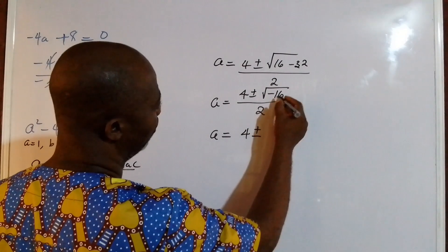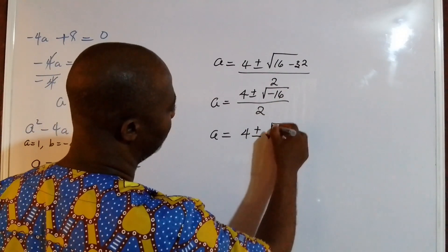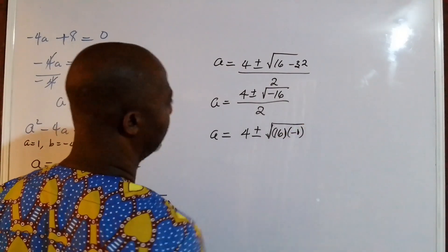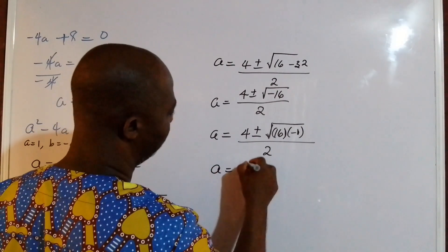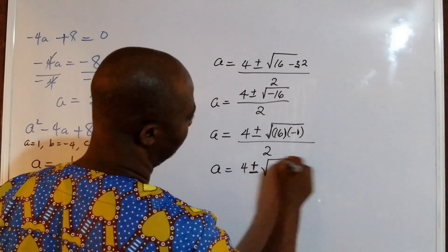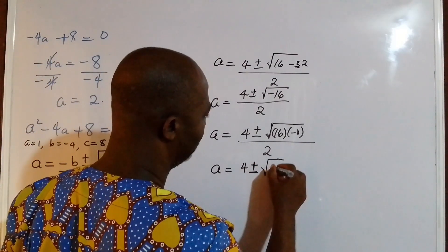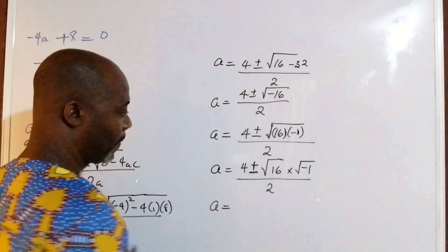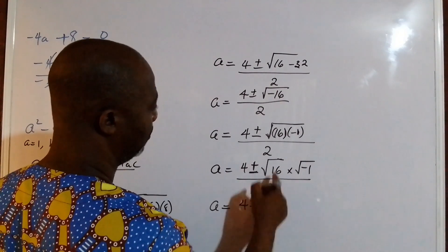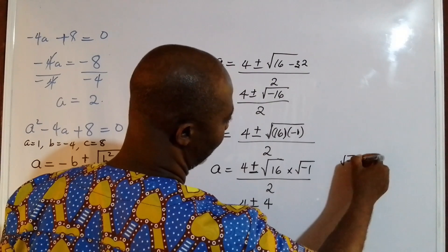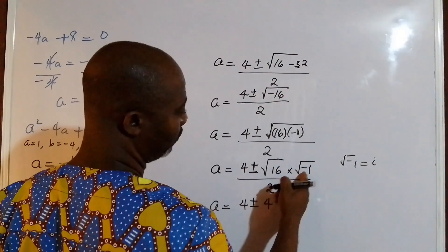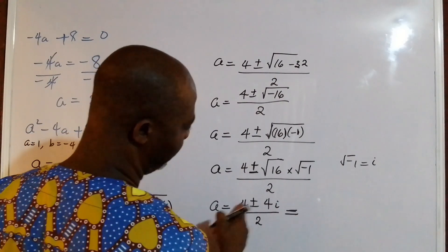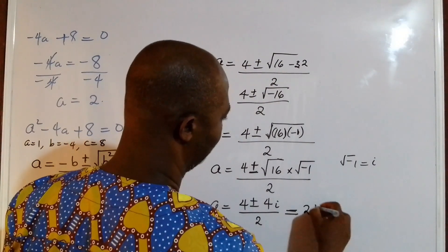I'm going to split up the square root of minus 16 into the square root of 16 times the square root of minus 1. Of course, the square root of minus 1 is i, so we replace it with i. This gives us: a equals 4 plus or minus 4i, all over 2. Dividing through by 2, we get a equals 2 plus or minus 2i.